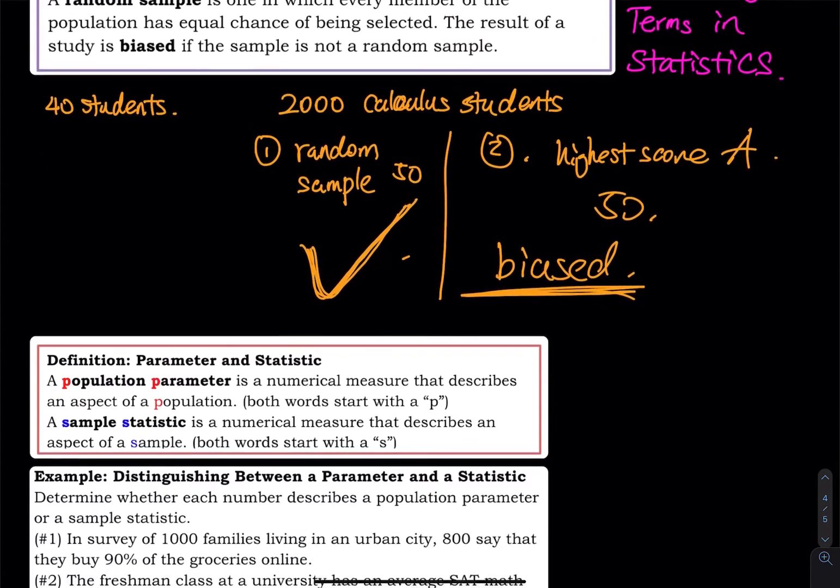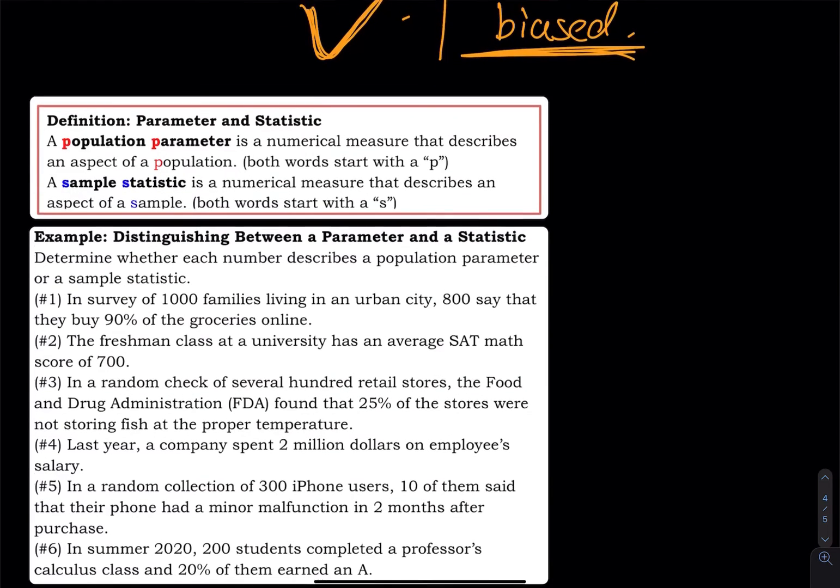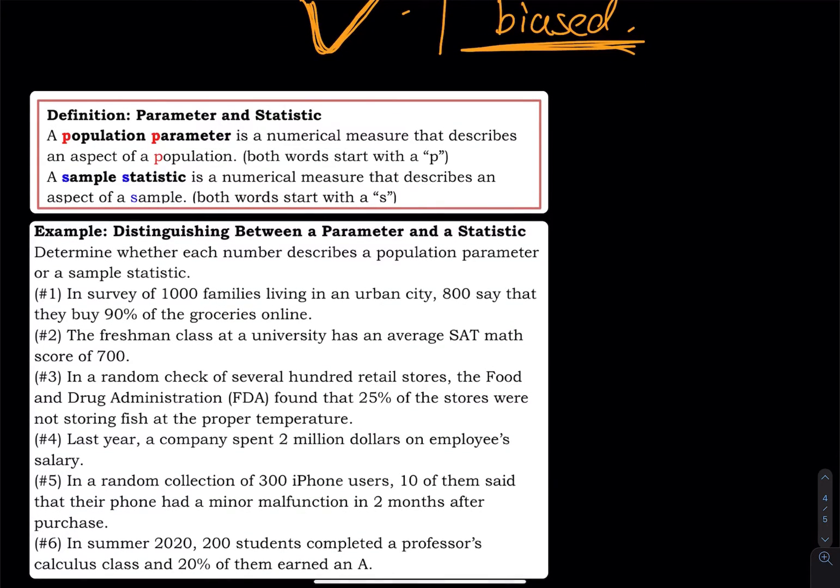So moving on to more keywords, parameter and statistics. A population parameter is a numerical measure that describes an aspect of a population. So parameter is a number that describes a population. The easiest way to memorize this is population parameter - they both start with a P. A sample statistic is a numerical measure that describes an aspect of a sample. So statistic is a number that describes a sample. The best way to memorize that is they both start with an S.